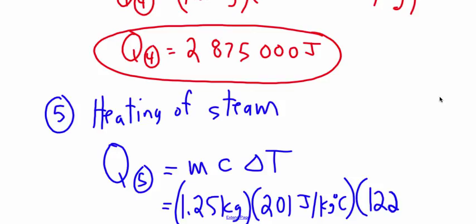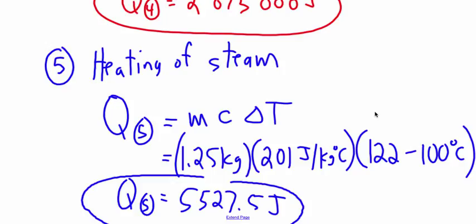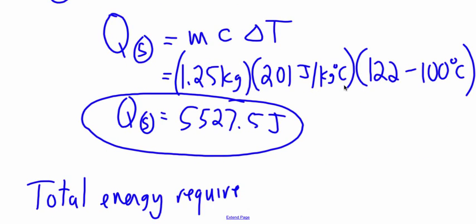And the temperature went from 100 up to 122. Not very much. 5,527.5 joules. So not very much energy is required to heat the steam. So now we've done all of those five steps.